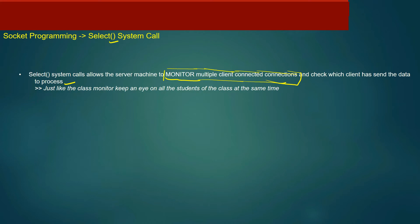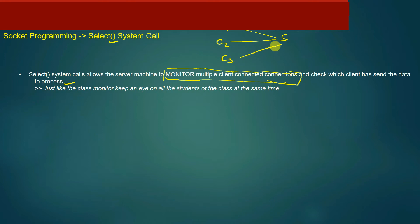Suppose there are clients C1, C2, and C3, all connected to server S. At any point in time, C1, C2, or C3 can send data to server S. Using the select system call, server S monitors the connections of C1, C2, and C3 simultaneously, identifying which client has sent data and which client needs a service. Select system call helps the server achieve simultaneous monitoring of connected clients.